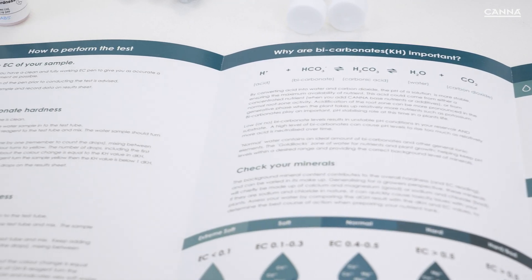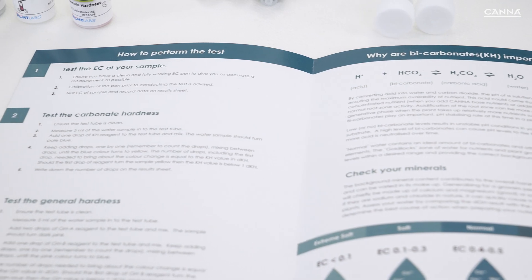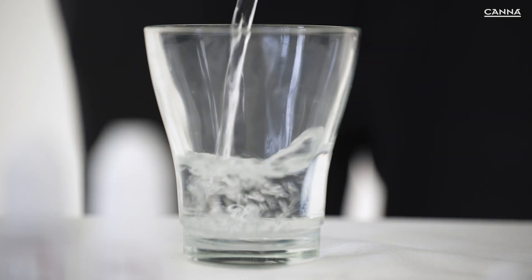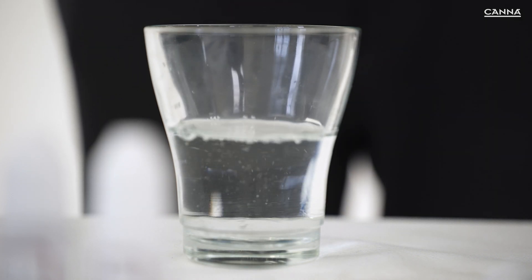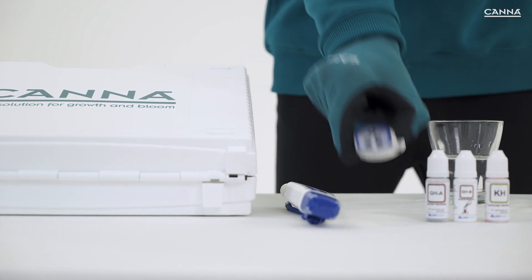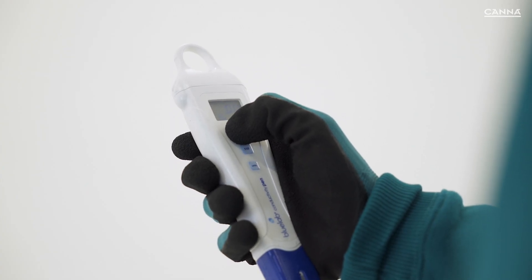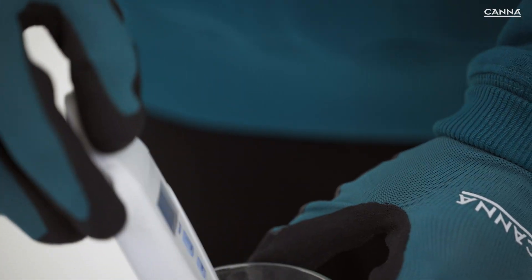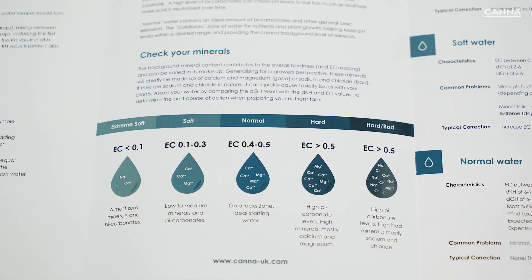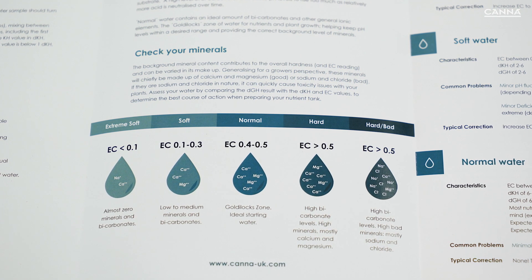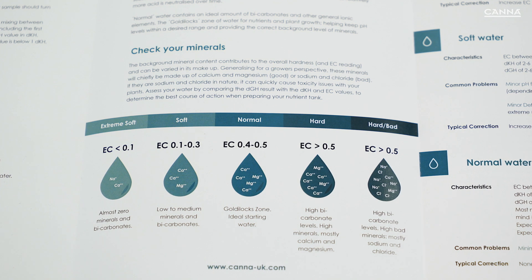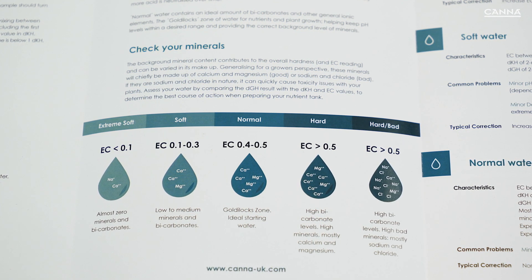The first thing to do is accurately identify the type of water you have. The EC reading of your water is the first thing to check. Before you start, calibrate your EC pen to ensure accurate results. Ideally, allow time for the temperature of the water to settle to room temperature. Take an EC reading of the water with your EC pen and write this down. An EC of 0.3 or less indicates that you have soft water. An EC of between 0.4 and 0.5 indicates that you have normal water. An EC of 0.5 or above indicates you have either hard or bad water.